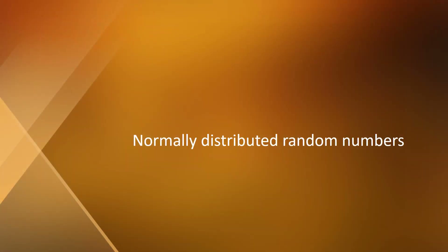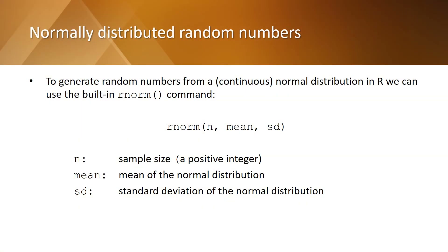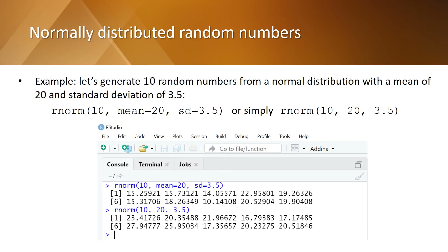Let's now generate normally distributed random numbers. To generate random numbers from a normal distribution in R, we can use the built-in rnorm command and provide the appropriate information: N is the sample size, mean is the mean of the normal distribution, and SD is the standard deviation of the normal distribution. As an example, let's generate 10 random numbers from a normal distribution with a mean of 20 and a standard deviation of 3.5. You can write that in the long way or in the short way and see the results in RStudio.